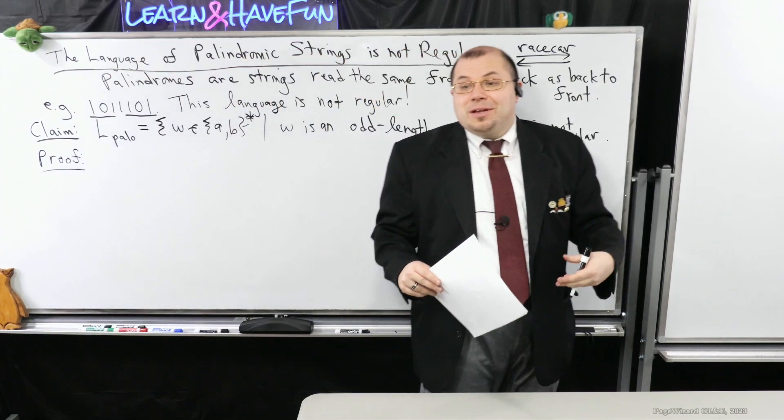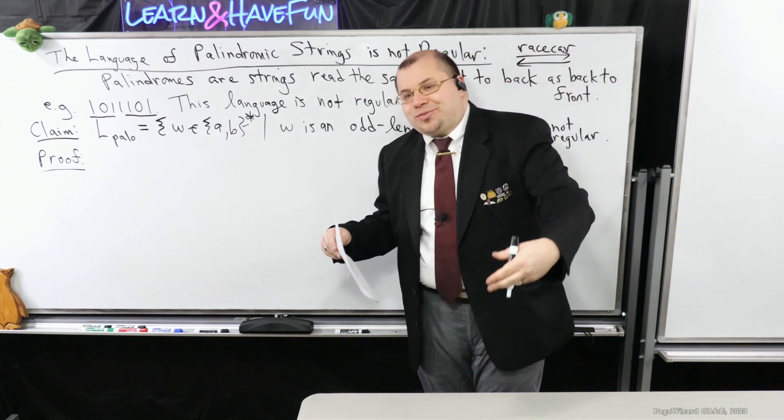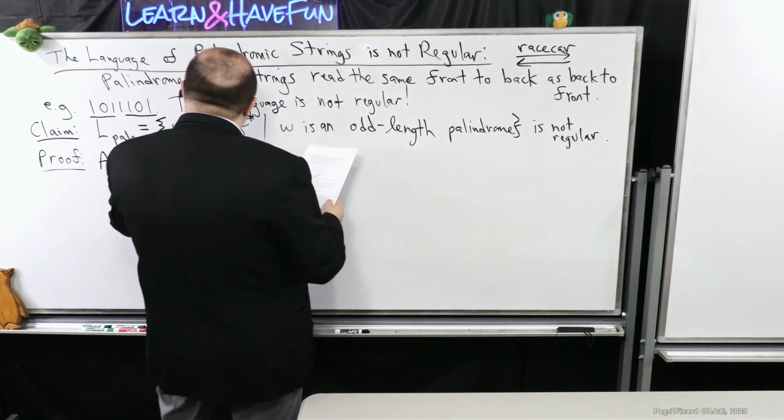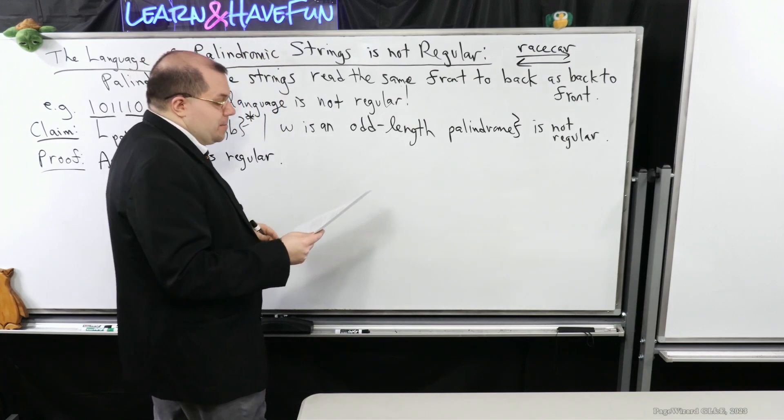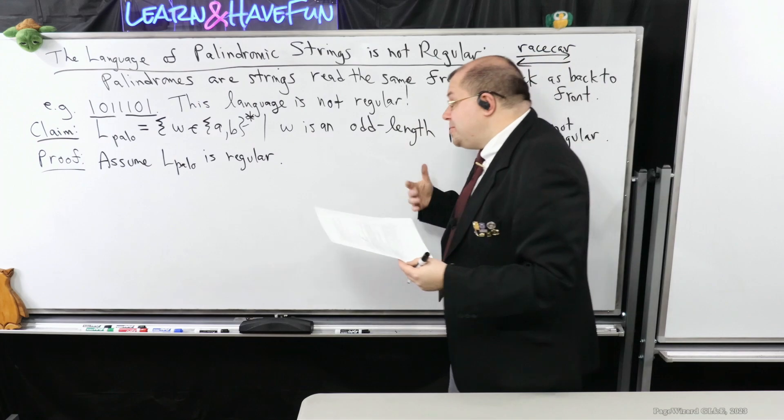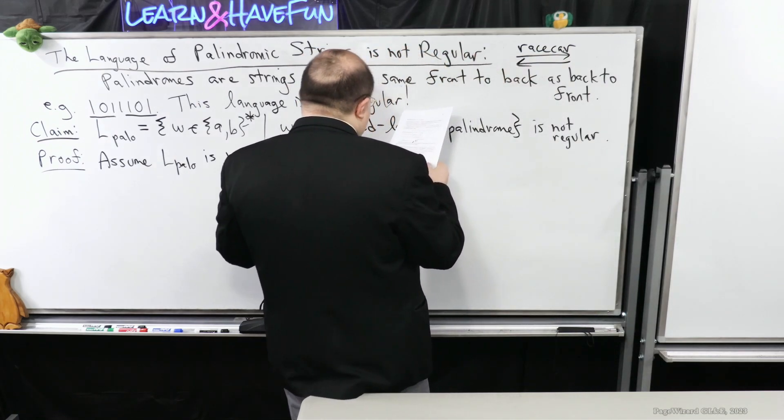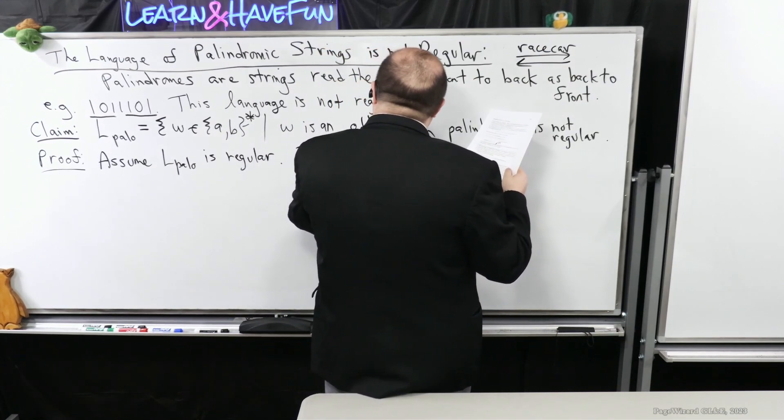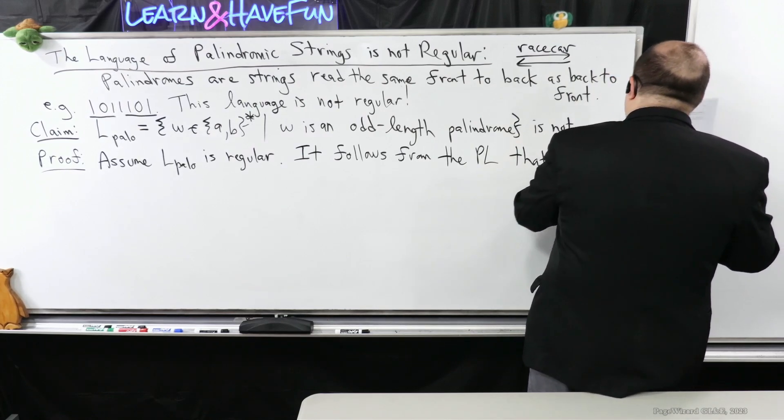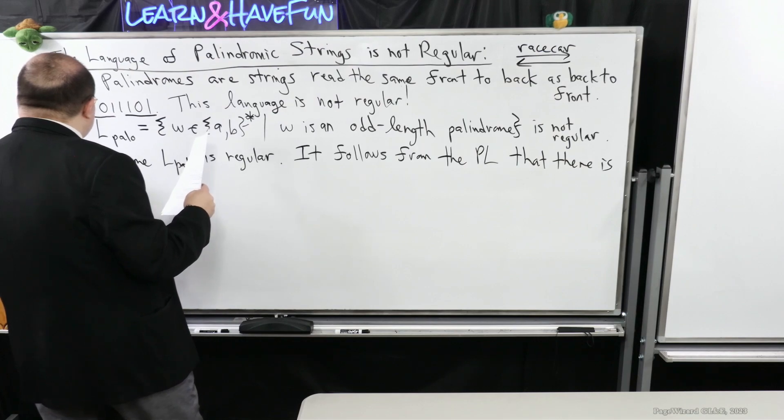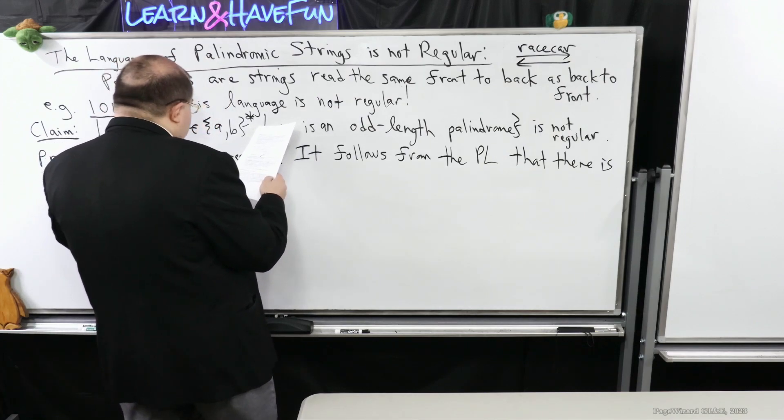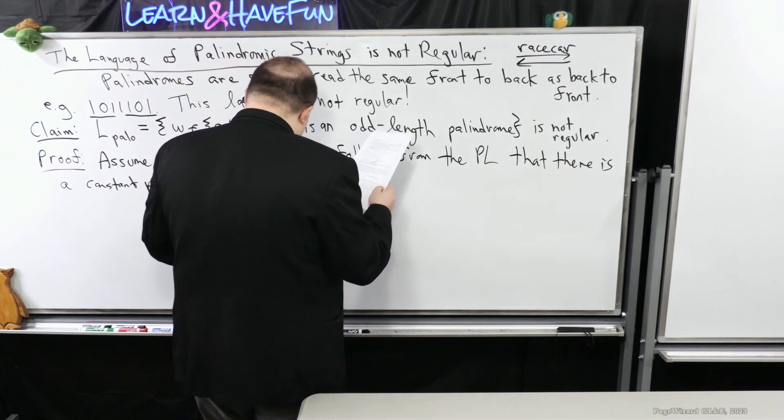Well, first, if we want to use contradiction, we want to show, if we want to show that it's not regular, we're going to assume that it is regular in order to derive a contradiction. So we're going to assume L_palo is regular. So if I want to use the pumping lemma, which I'll just abbreviate as PL, what happens? Well, I end up getting this constant P, which we call the pumping length. I get that for free when I assume this. So it follows from the pumping lemma that there is a constant P that follows its conditions.